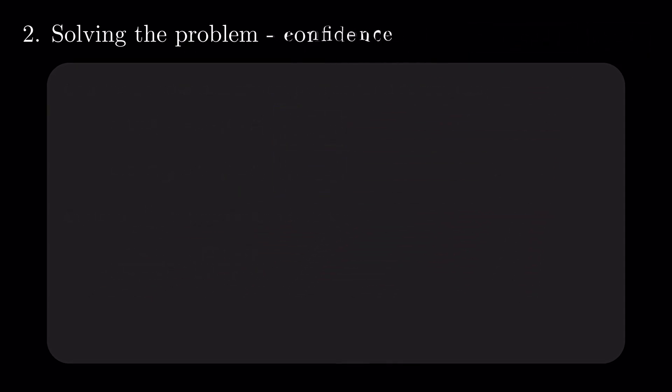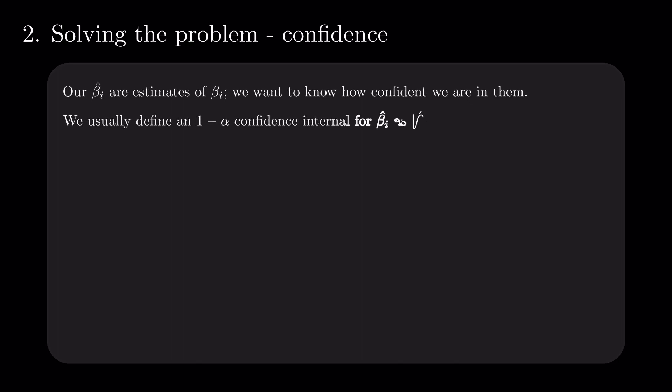One thing to remember is that beta hat merely estimates the values governing the linear relationship between y and x. This means we want to measure how confident we are in them. The most common measure is a 1-alpha confidence interval. We need the estimate, the z-score, and the standard deviation to compute it.